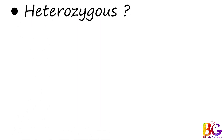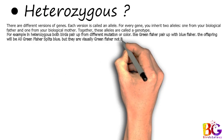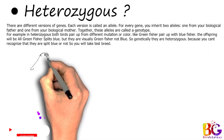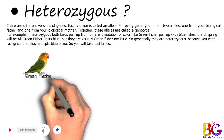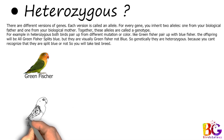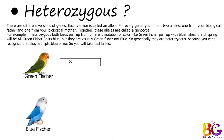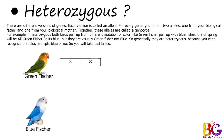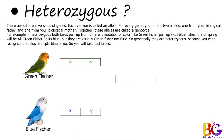The next topic is heterozygous. What is heterozygous? There are different versions of genes, and each version is called an allele. For every gene you inherit 2 alleles — one from your biological father and one from your biological mother. Together these alleles are called a genotype. For example, in heterozygous, both birds are paired from different mutations or colors, like greenfisher paired with bluefisher. The offspring will all be greenfisher splits blue, but they are visually greenfisher, not blue. So genetically they are heterozygous, because you can't recognize that they are split blue or not — you would need to test breed. Always remember: any split bird is heterozygous.